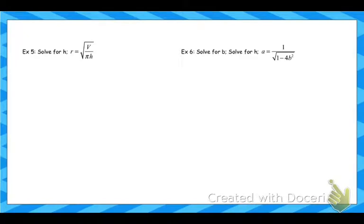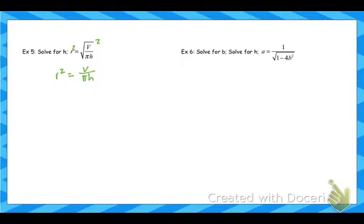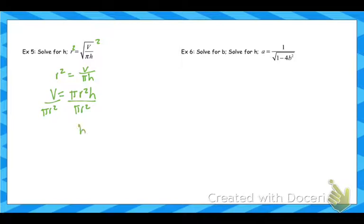The next section on literal equations is for GT students — honors students can skip or use it for extra practice. Literal equations are equations full of variables, common in physics and on the SAT/ACT. We follow the same solving process but get our answer in terms of other letters. To isolate h, first get rid of the square root by squaring, then cross-multiply or multiply both sides by pi r squared. The result is the volume of a cylinder formula, and dividing gives h equals V over pi r squared.